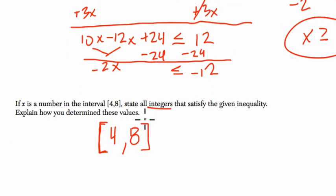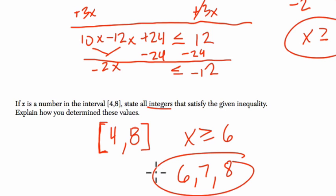To state all the integers, that means positive or negative whole numbers that satisfy the given inequality. So if x is anything larger than or equal to 6 so that could be 6 or 7 or 8, all of those numbers are in this interval up here. Alright, I hope this helped.